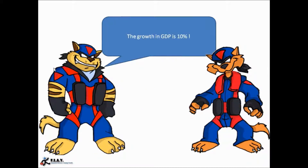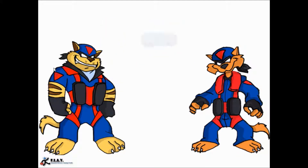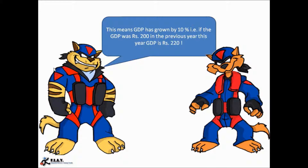So do you know what it means when somebody says that the growth in GDP is 10%? It actually means that the GDP has increased by 10% when compared to the previous year's GDP. That is, if in some year, say 2005, the GDP was rupees 200 and it grew by 10% in that year, then the GDP in the year 2006 should have been 200 plus 10% of 200, that is 20 — hence rupees 220. So the GDP in 2006 is rupees 220.